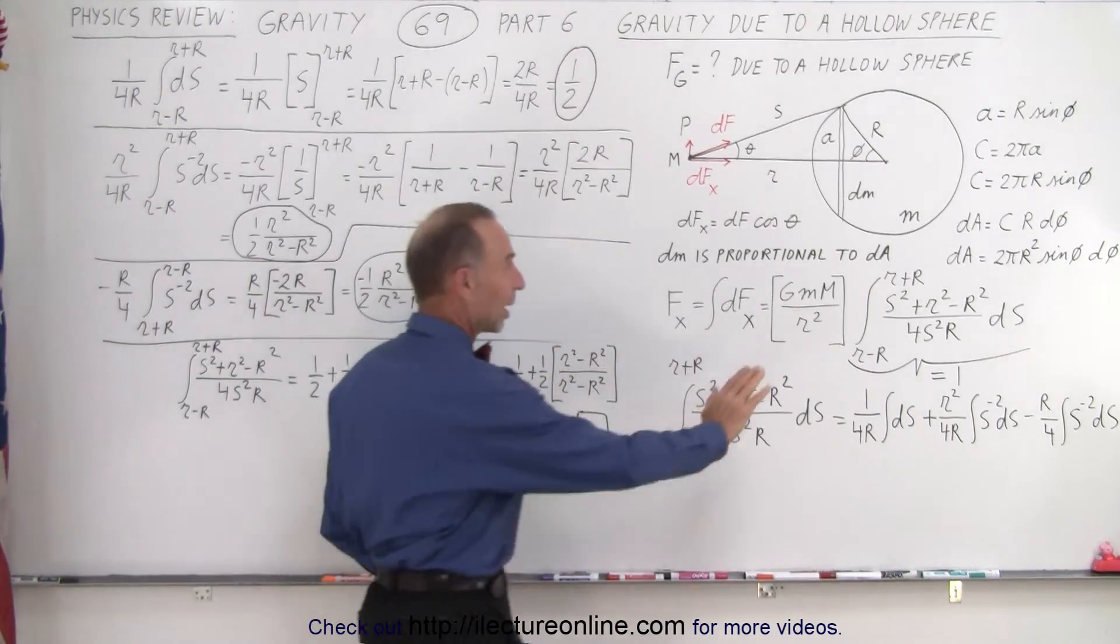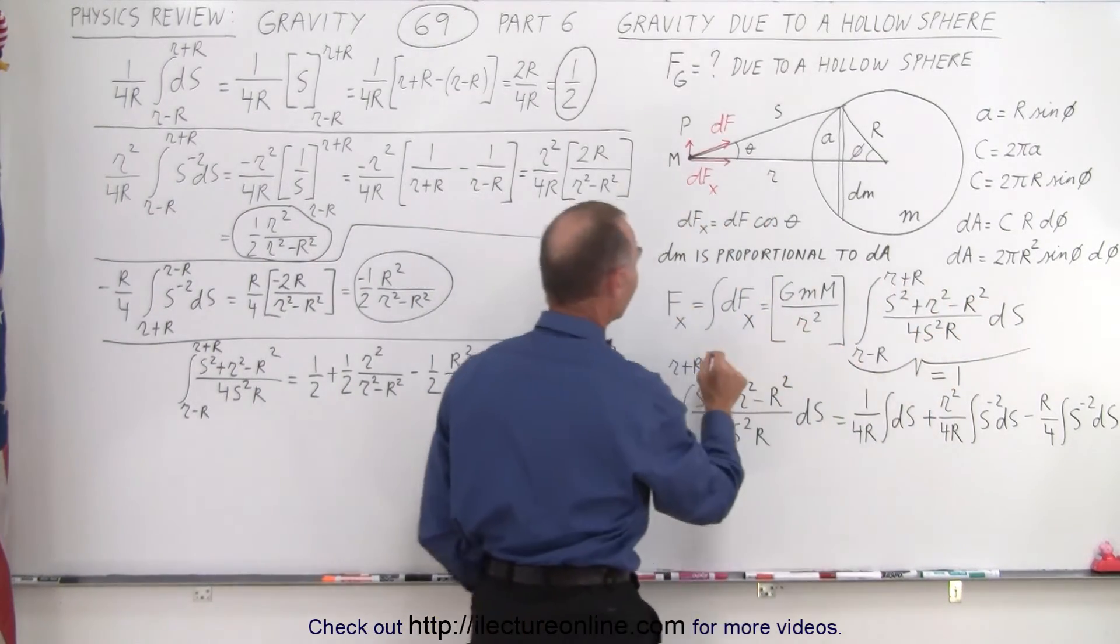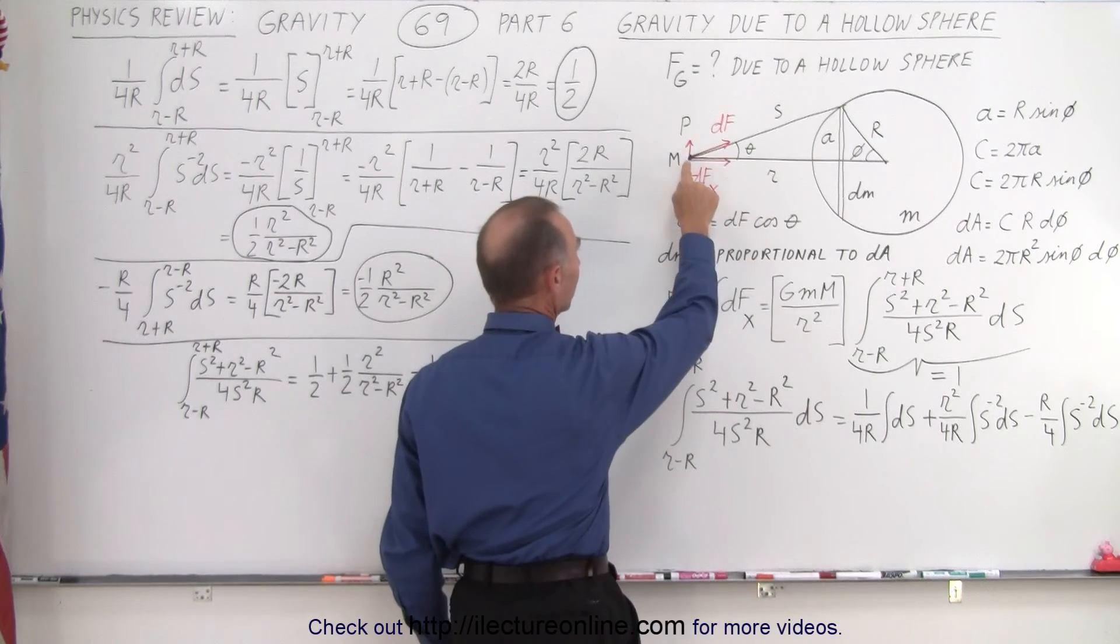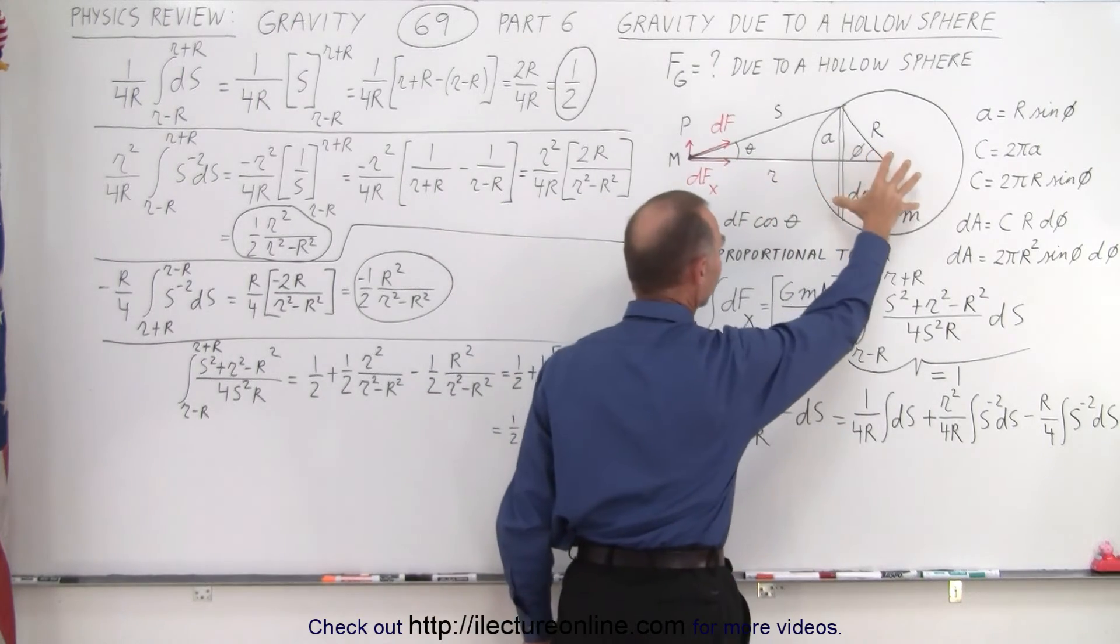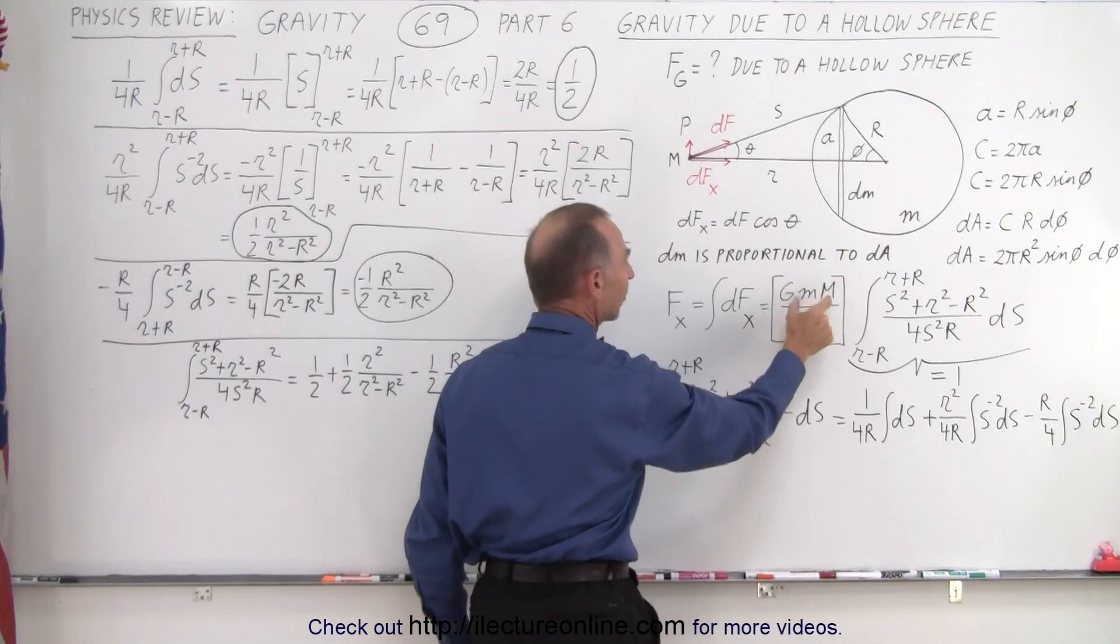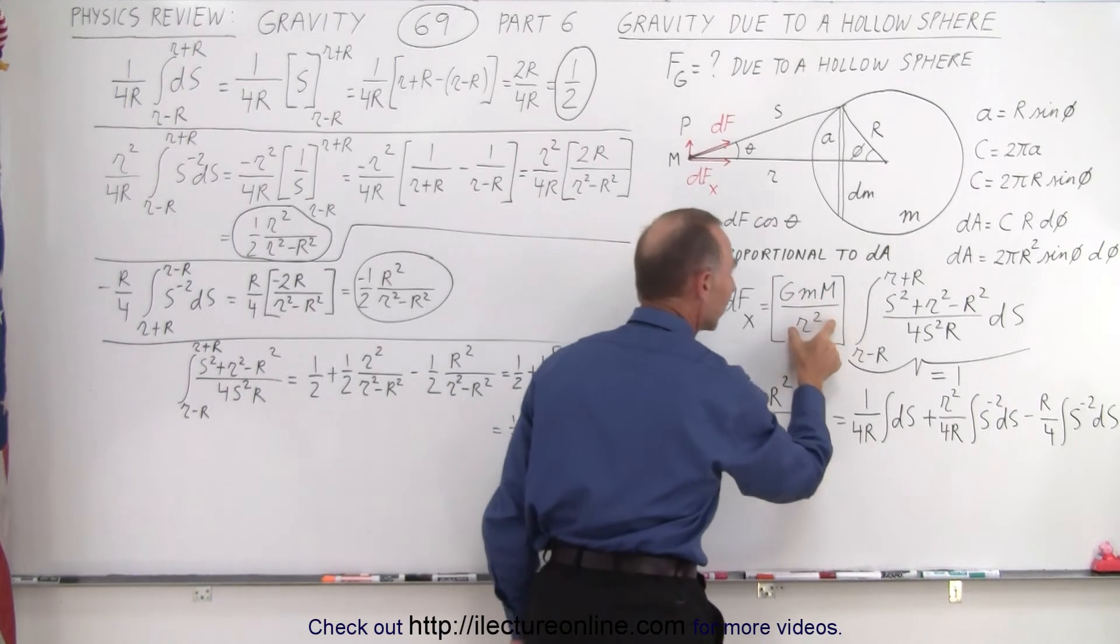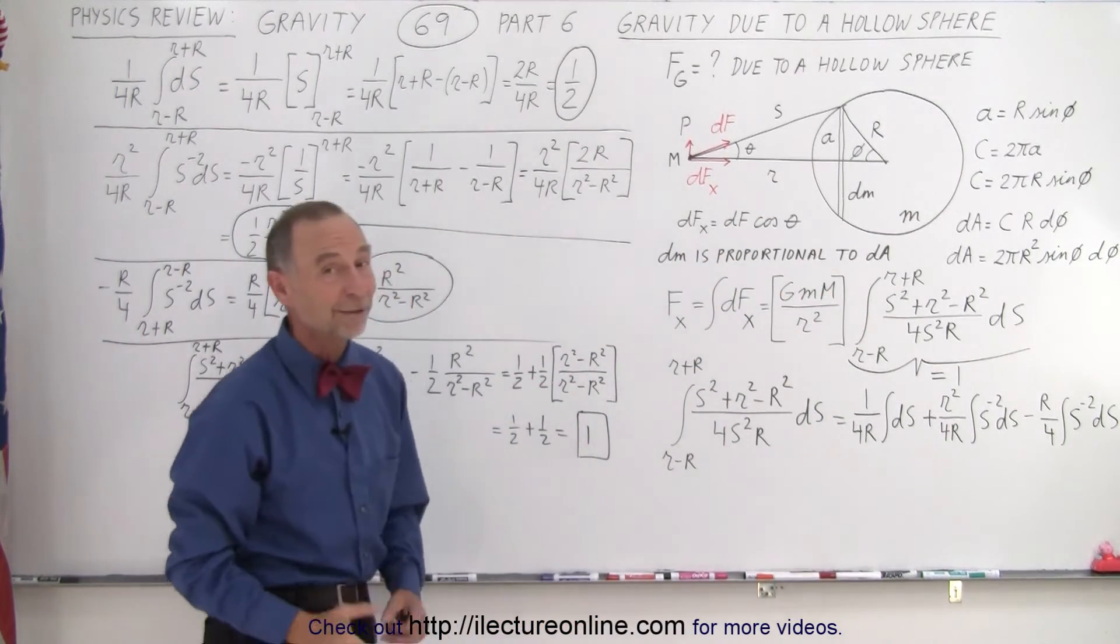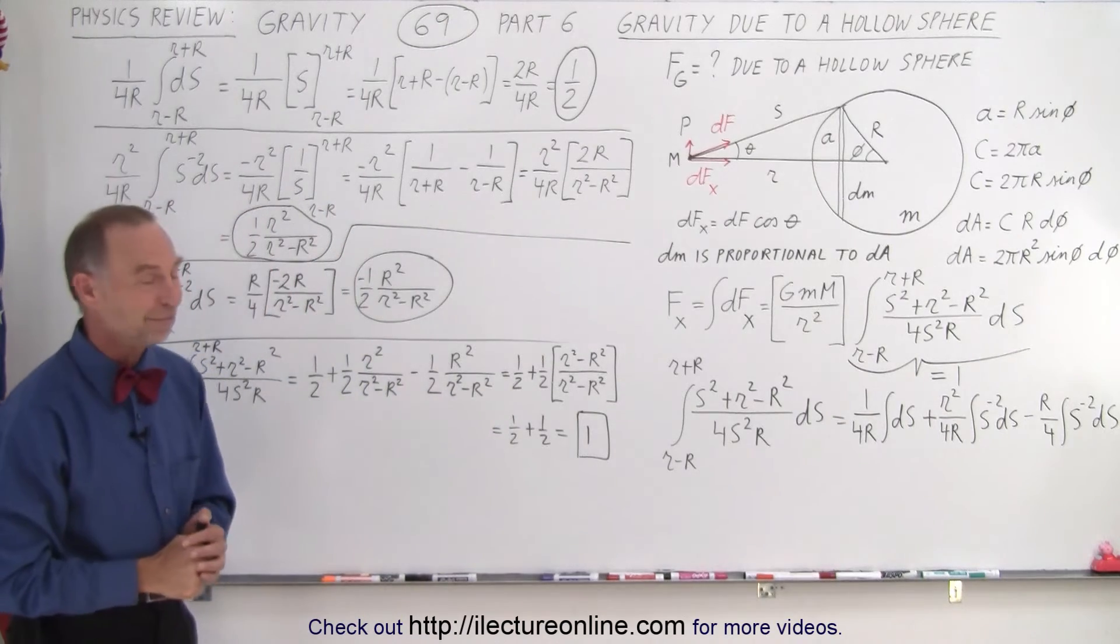And so, if this then drops out, this becomes 1, then you can see that the force of attraction between a mass here and a hollow cylinder is going to be equal to g times the product of the masses divided by the distance between their center masses squared, and that is how it's done.